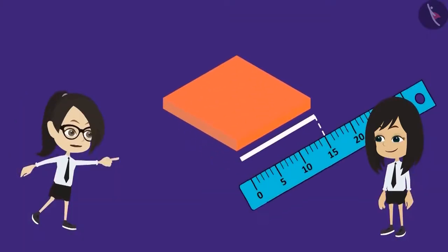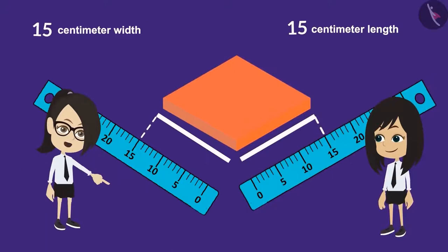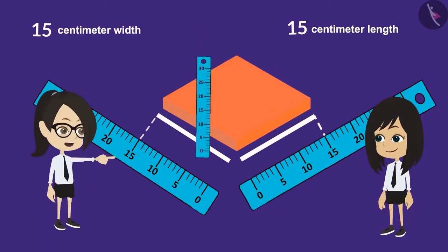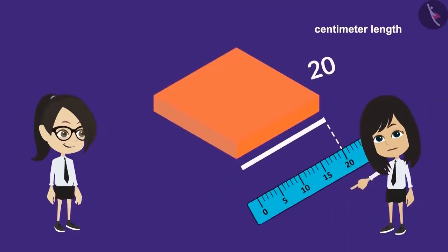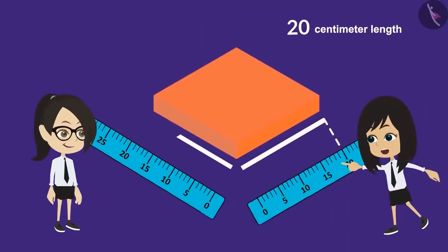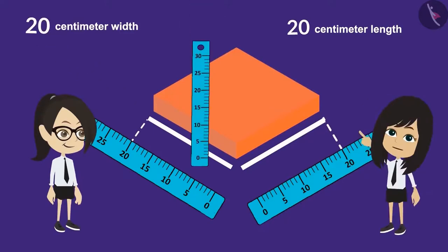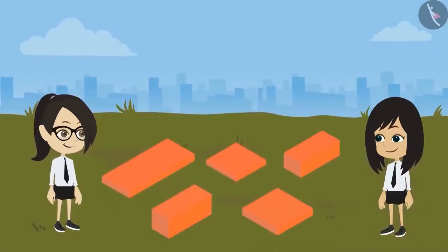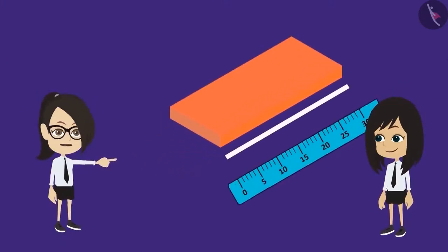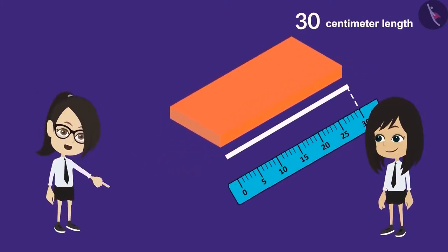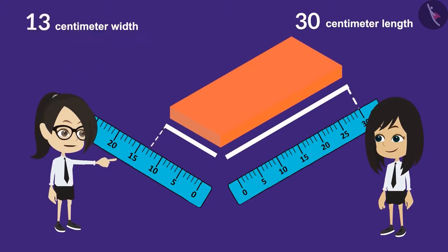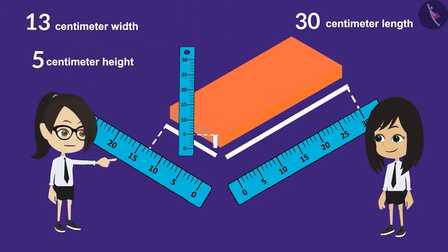This brick is 15 cm long. Its breadth is also 15 cm, which is the same as its length, and the height is 5 cm. This brick is 20 cm long. Its breadth is also 20 cm and the height is 5 cm. This brick is the longest of all. Its length is 30 cm, its breadth is 13 cm and its height is 5 cm.